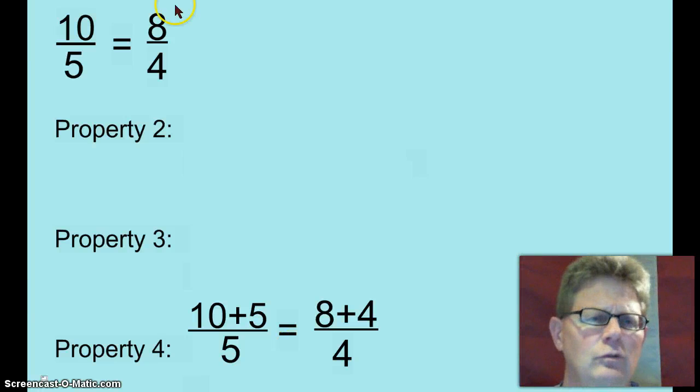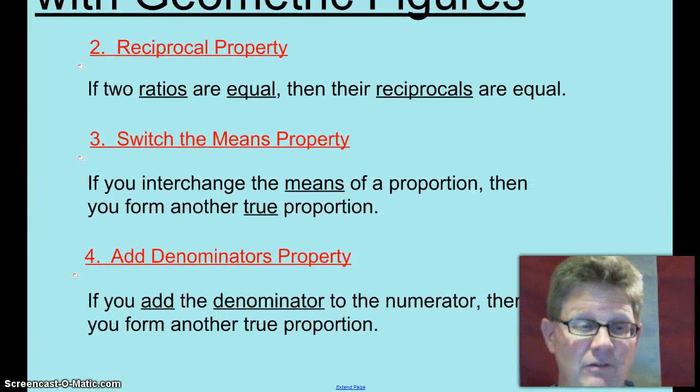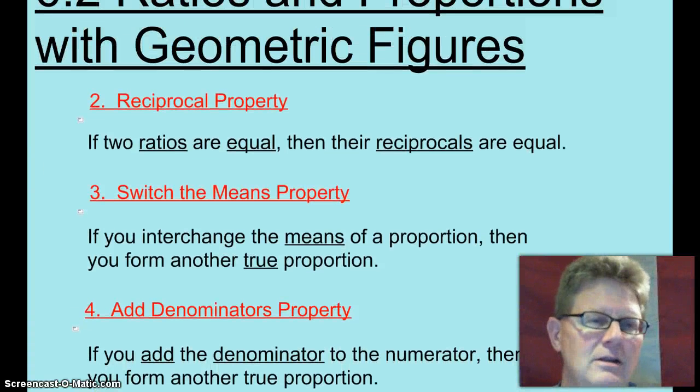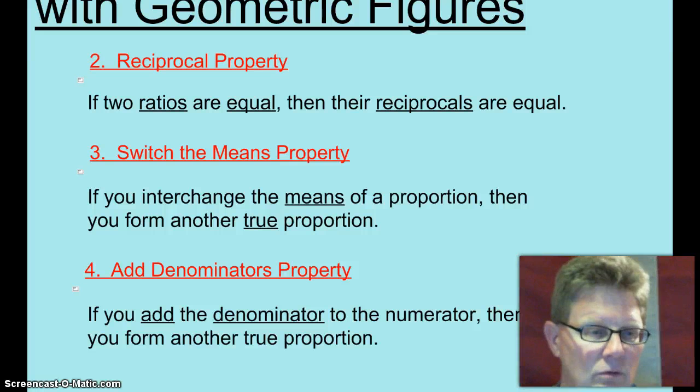And I know you're asking, well this is property two and property three and property four. What was property number one? That was the cross products property which we learned from lesson 6.1. Let's go ahead and move on to how we're going to use proportions in geometric figures.